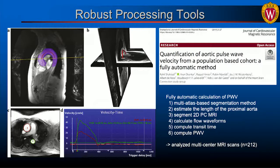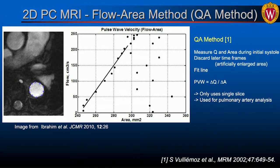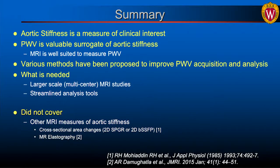Robust processing tools are an important factor in pulse wave velocity analysis. A recently published tool from a group in the Netherlands automates segmentation, pulse wave velocity analysis, and distance measures entirely. Such tools available across multiple sites would enable robust and repeatable analysis. Briefly, there are other methods beyond pulse wave velocity — such as the QA method, which can be done in a single plane by measuring changes in flow and changes in cross-sectional area during the upstroke of systole.